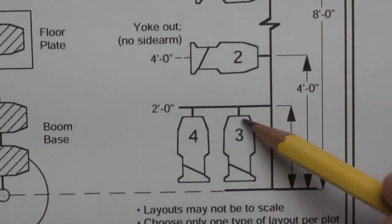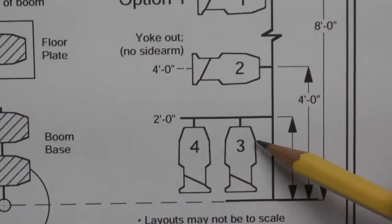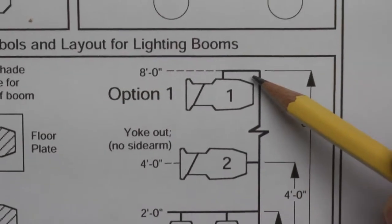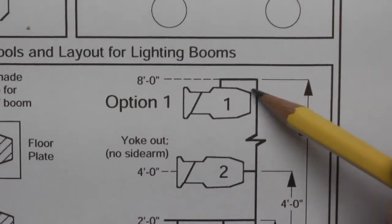This is a sidearm, two on a sidearm, or a double T sidearm, and then this would be a single sidearm at the top of the boom.